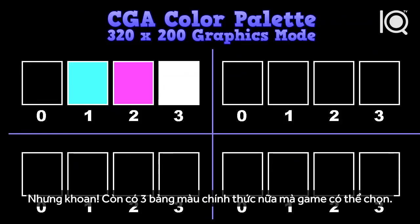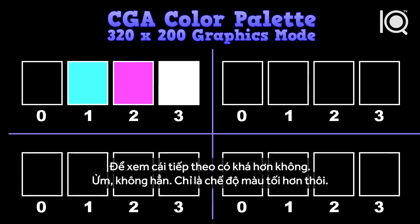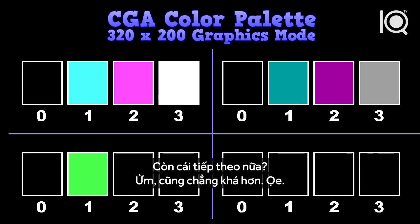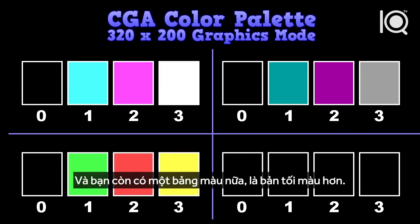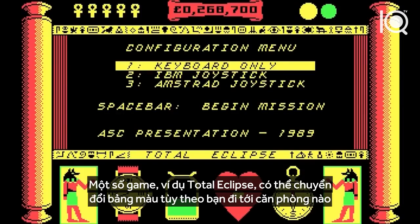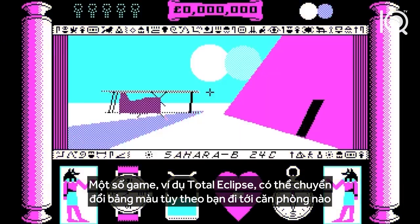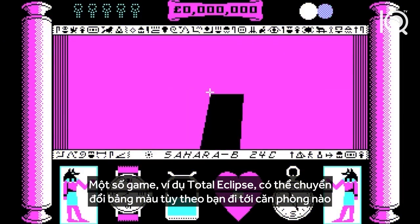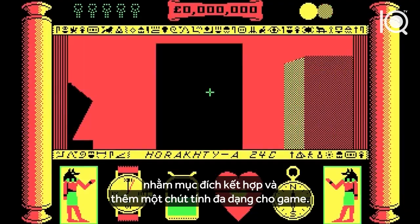There were 3 other official palettes that a game could choose from. The next one is basically a darker version of the first palette, and the others aren't great combinations either. Some games, like Total Eclipse, would actually switch palettes when going from room to room in order to mix things up a bit and add a little variety.